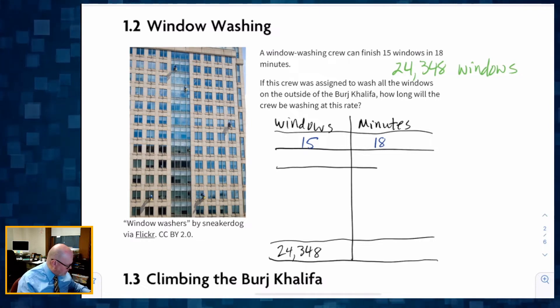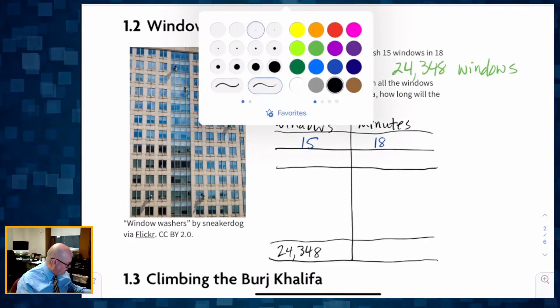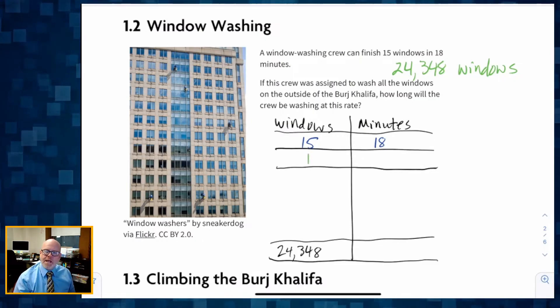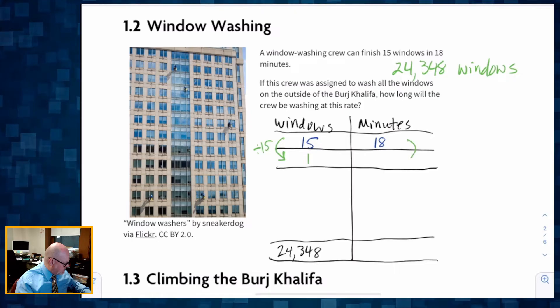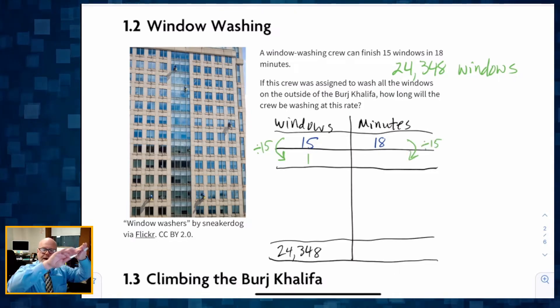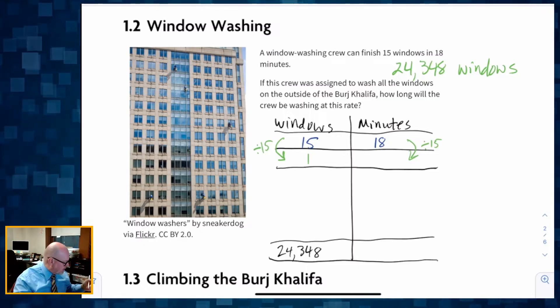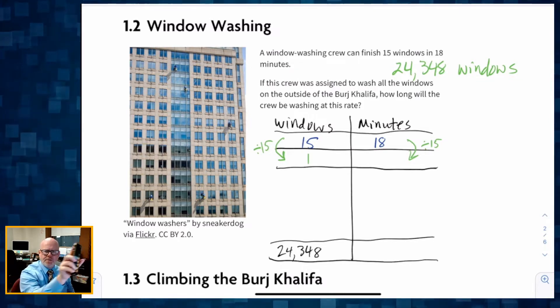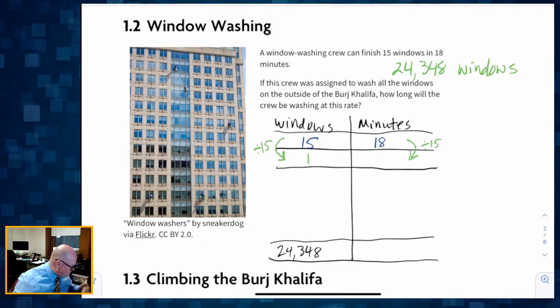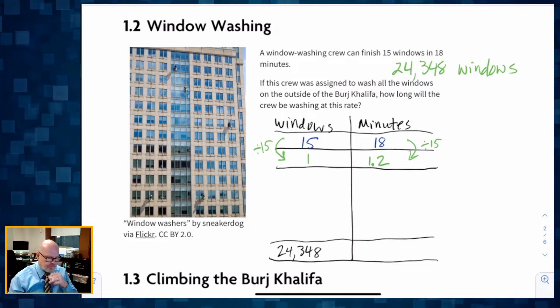The unit rate idea in this case is saying, I want to know how long will it take to wash one window. So how do we go from 15 to one? We divide by 15, which means we're going to scale this side down by 15. So now I have to get a calculator. I'm going to type in 18 divided by 15. 18 divided by 15 gives us 1.2.